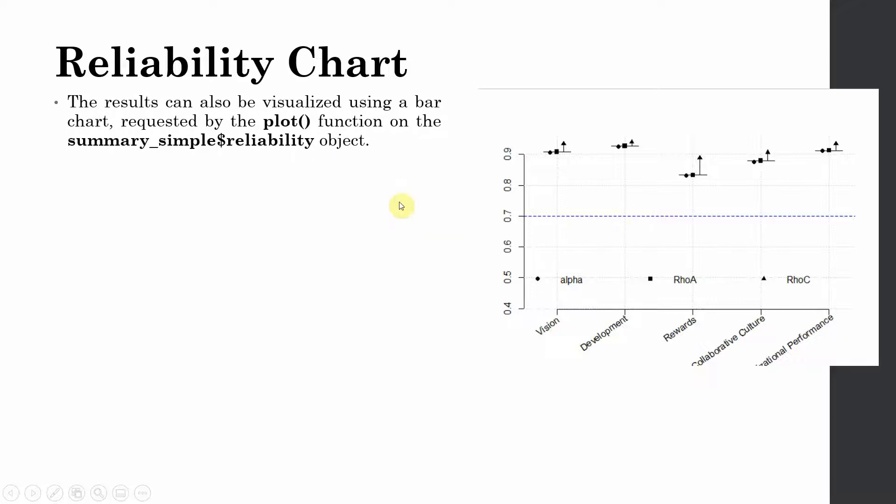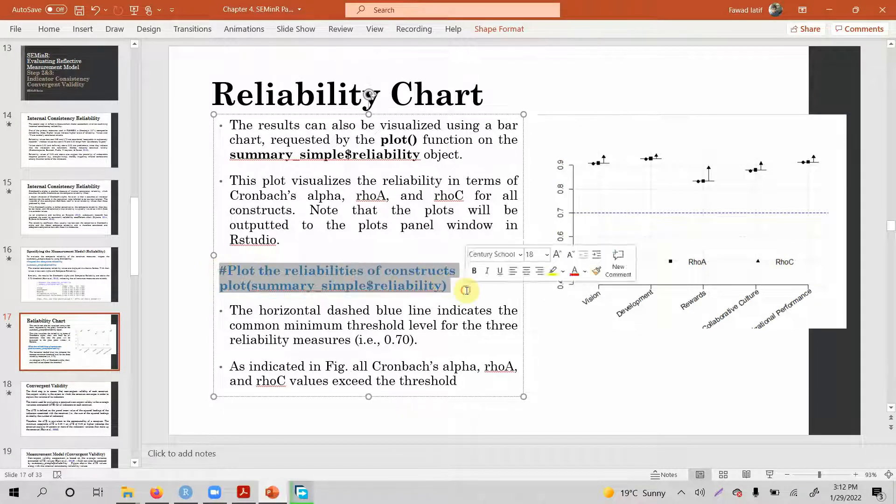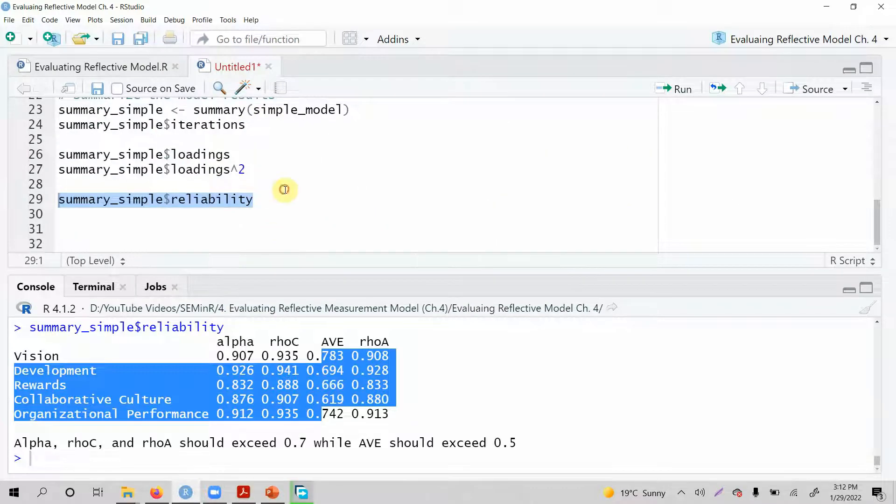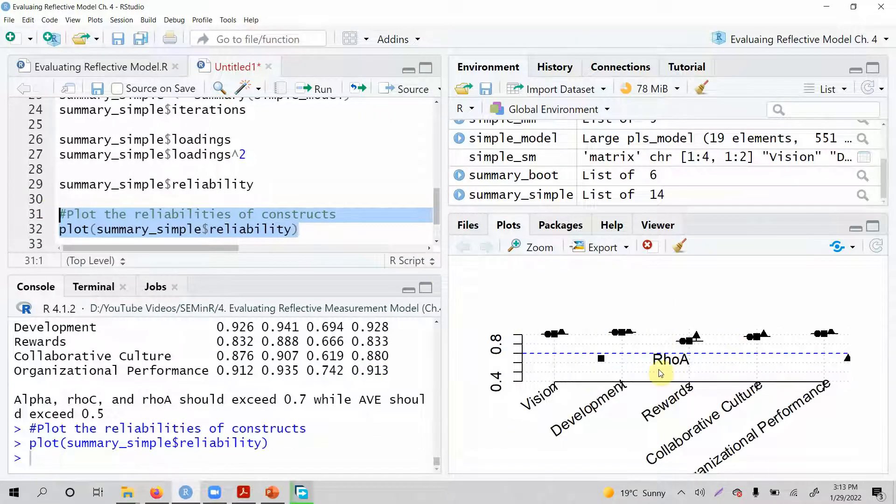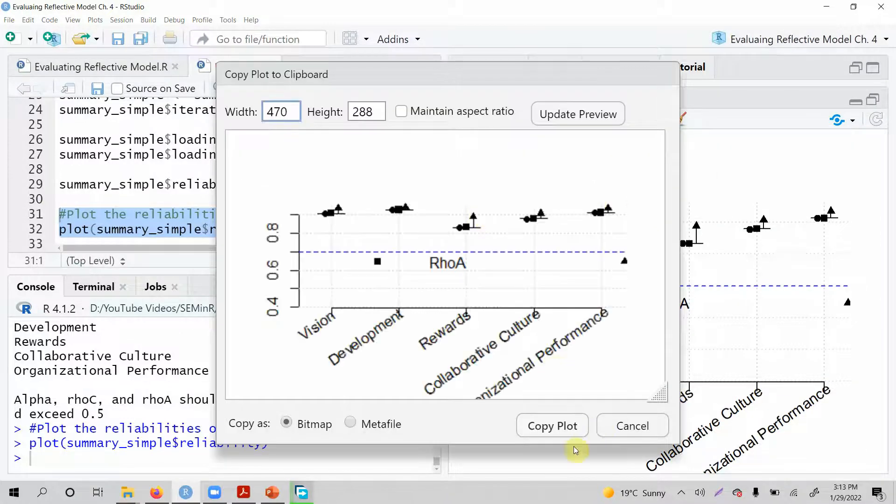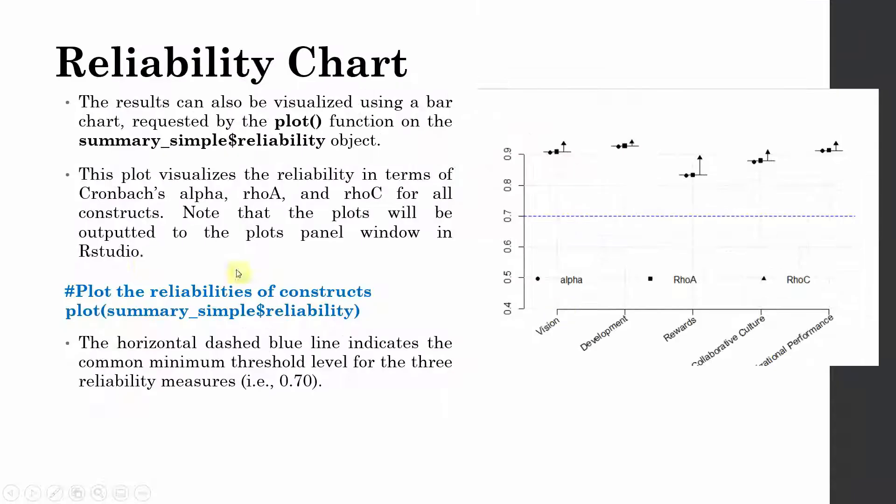Again, we can have our reliability chart as well using plot function. This plot visualizes the reliability in terms of Cronbach alpha, rho A and rho C for all the constructs. Note that the plot will be outputted to the plots panel window in the R studio. So how do you get this plot? It's very simple. You just need to type in this command. Let's type it in. Let's copy and let's put it here. Control V. Let's just select this. Run it. And here is your plot. You can export it as image, as PDF, or you can copy to clipboard. You can copy the plot and paste it anywhere you want. Now let's put it back here. Let's go back to our presentation. Now the horizontal dashed blue line indicates the common minimum threshold level for the three reliability measures, that is 0.70. Here it is. And all these constructs are well above the threshold value.